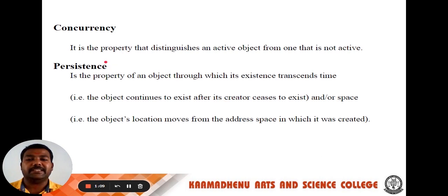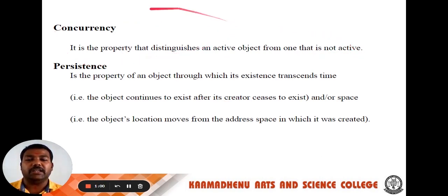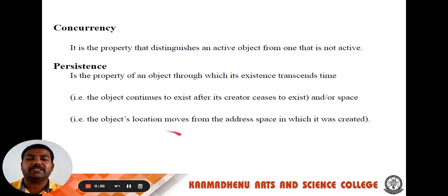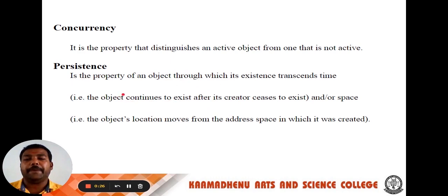The next: concurrency. Concurrency is the property that distinguishes an active object from one that is not active. The next one: persistence. Persistence is the property of an object through which its existence transcends time. For example, the object continues to exist after it was created, and persists beyond a single execution. Another example: the object's location moves from the address space in which it was created. These two examples illustrate persistence.